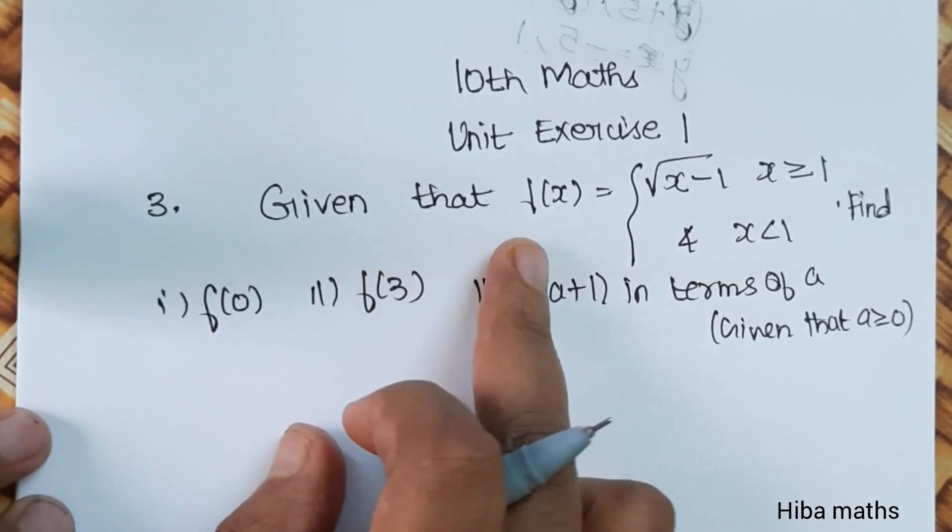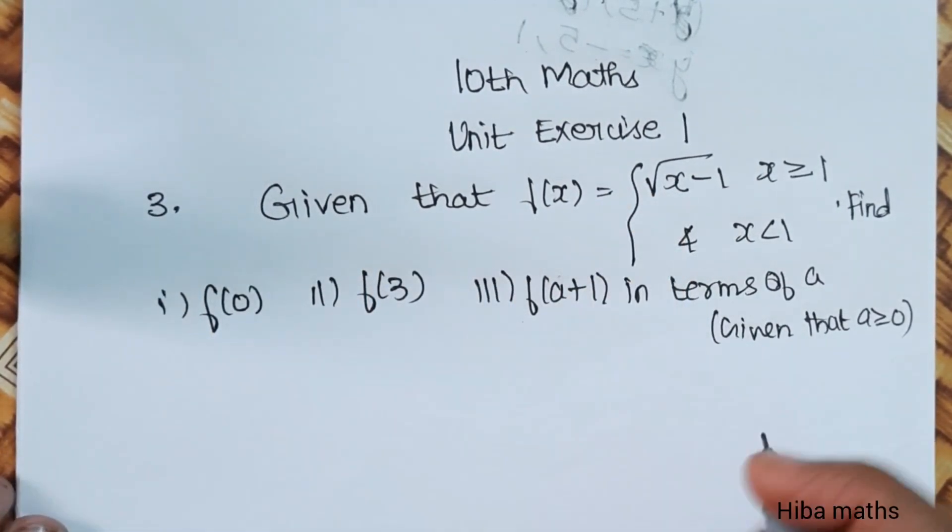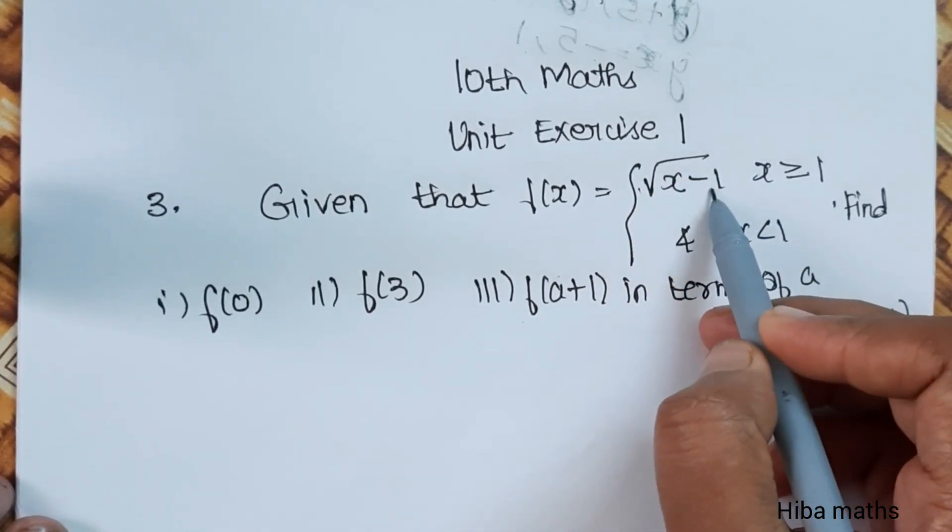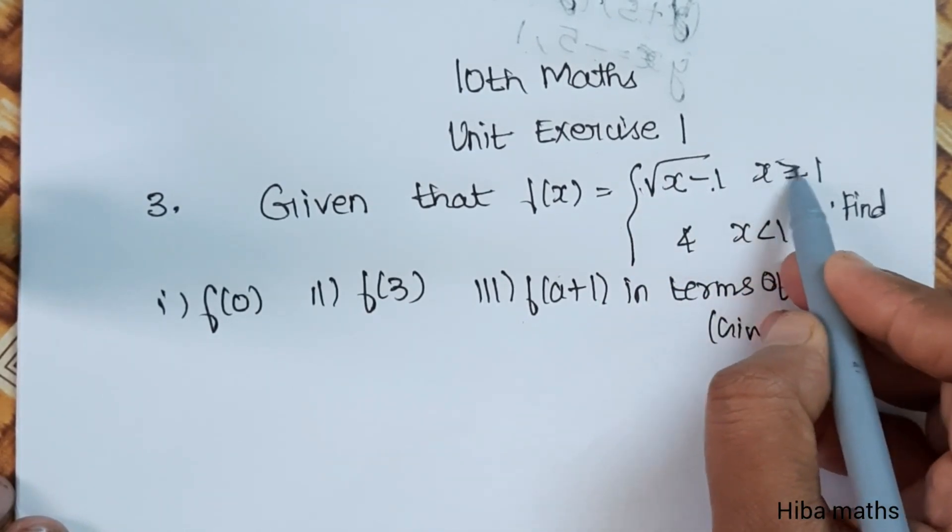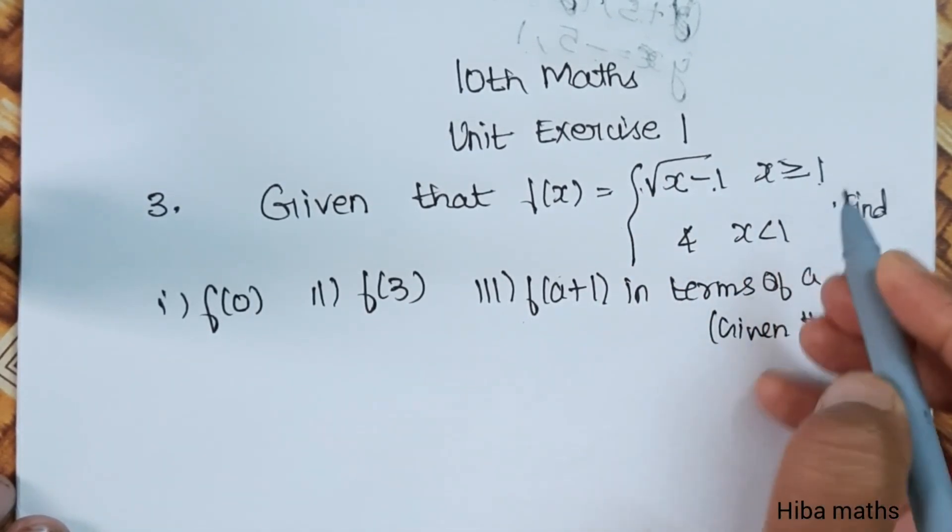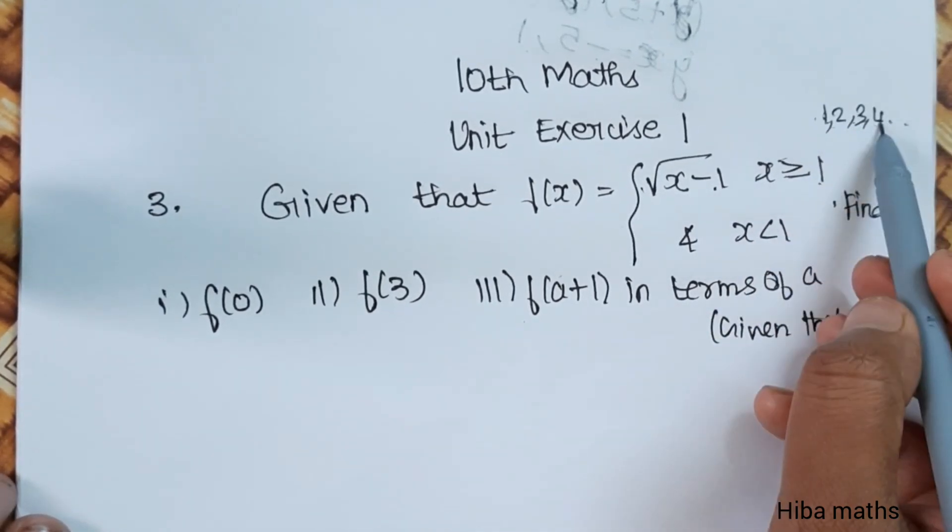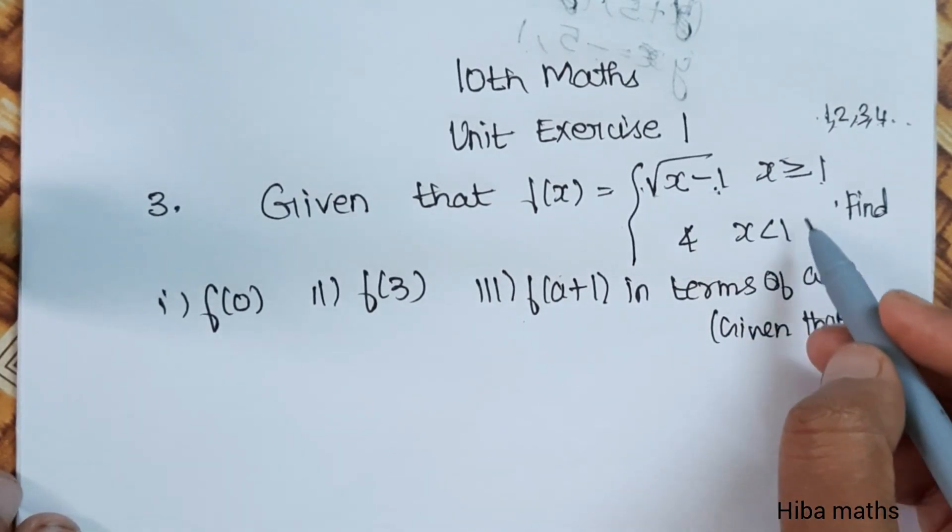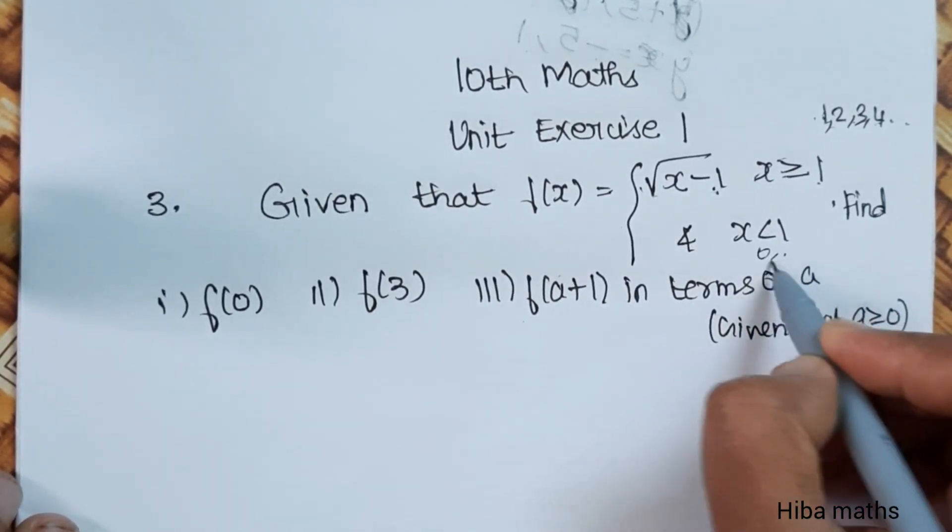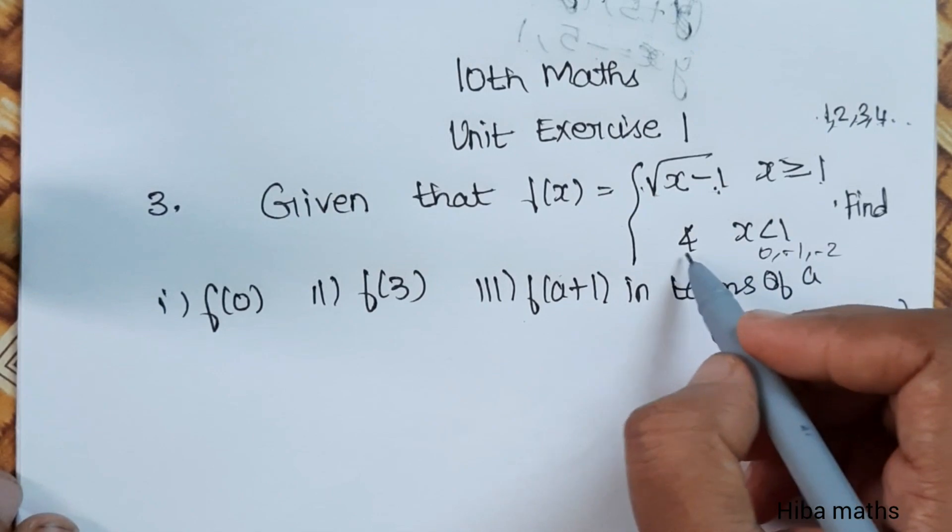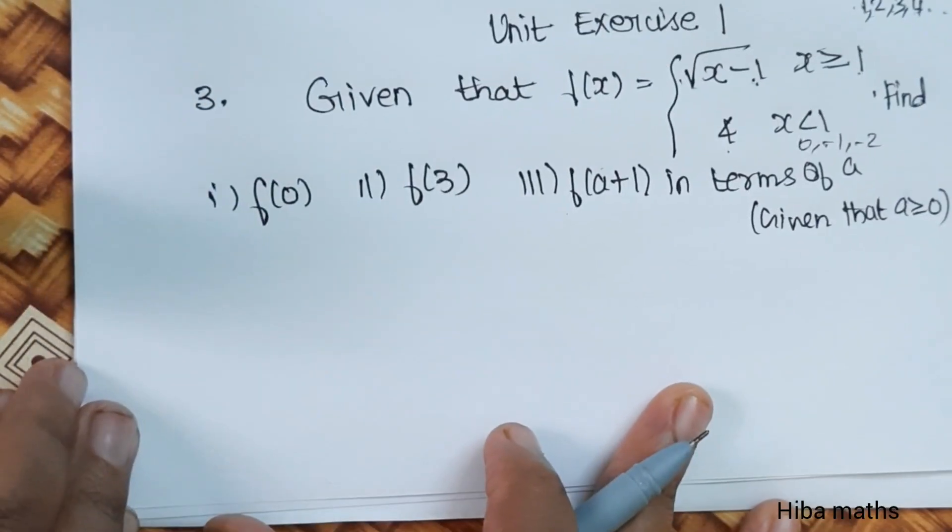Third question: given that f(x) is a piecewise function—root x minus 1 where x is greater than or equal to 1, so for values 1, 2, 3, 4 we get the first function. For x less than 1, like 0, minus 1, minus 2, we get the second part. Now the first question: